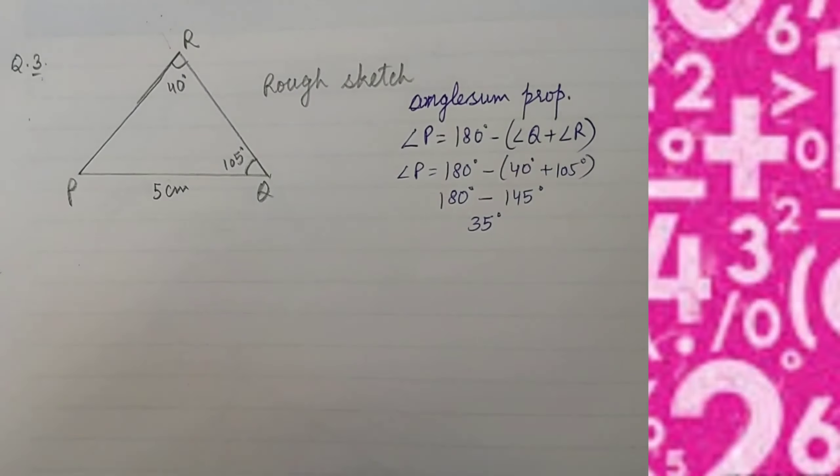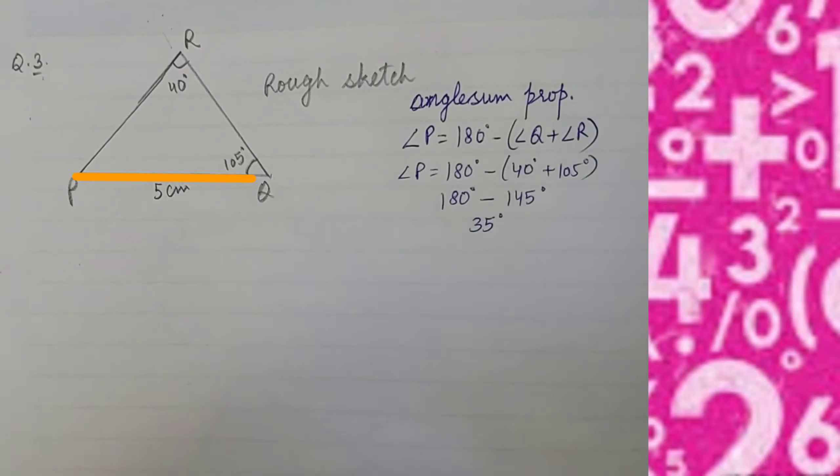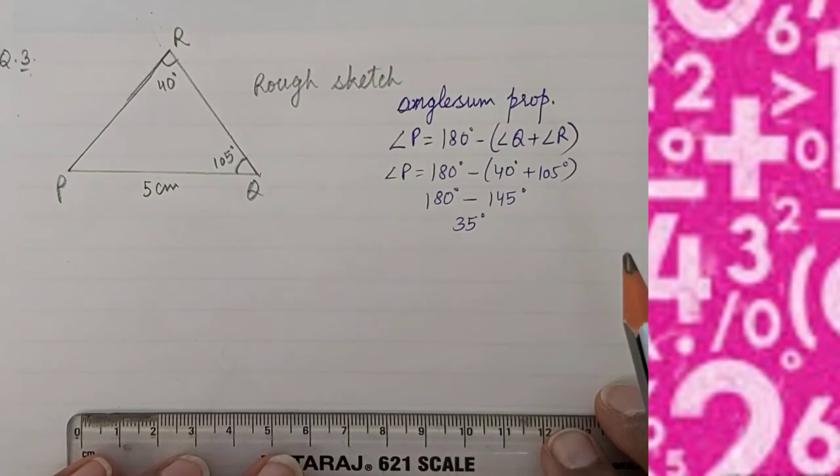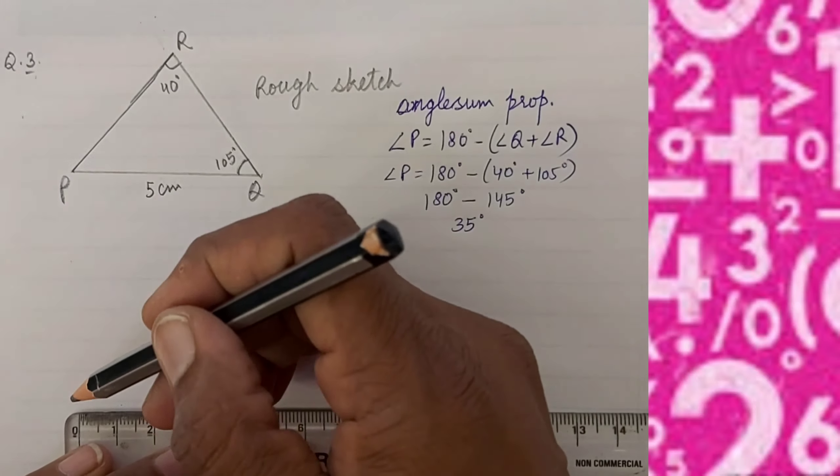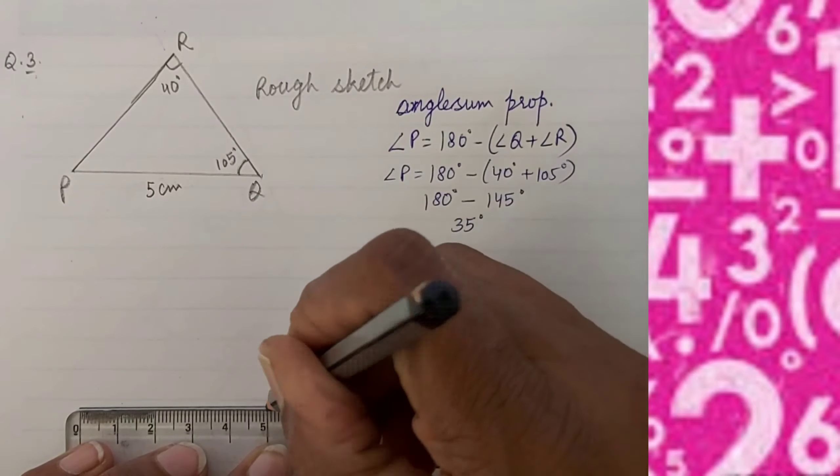Now we will draw line segment PQ equal to 5 cm and label it.